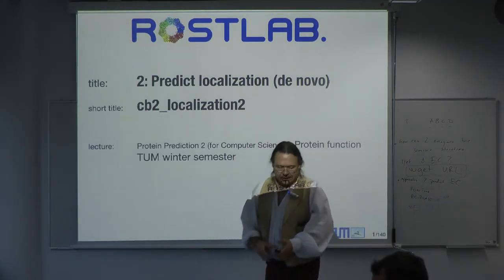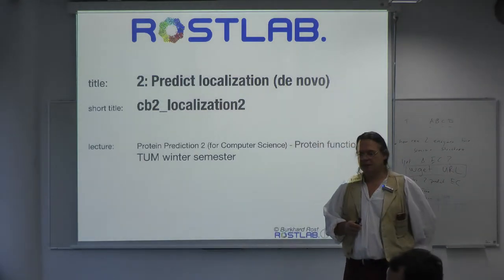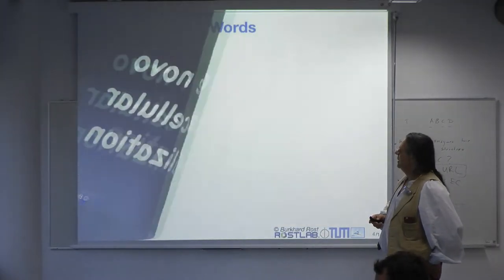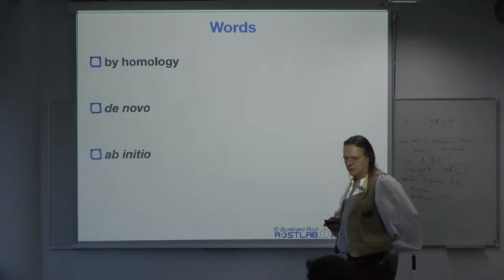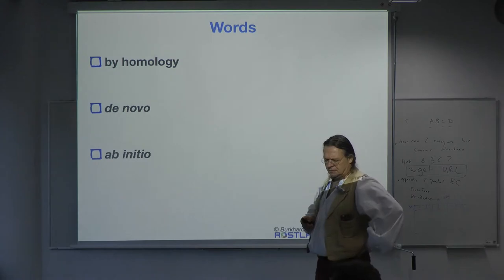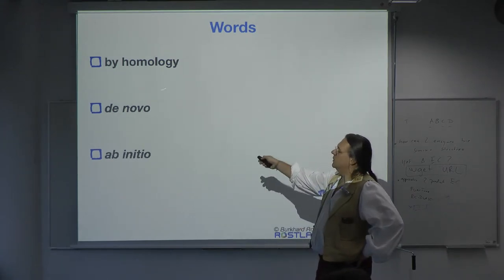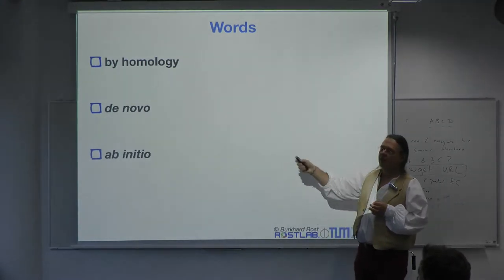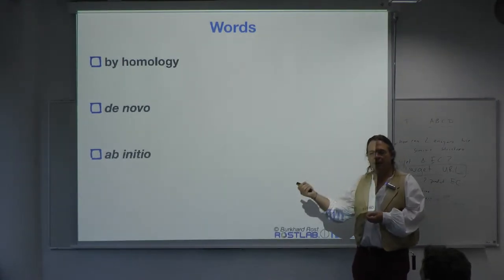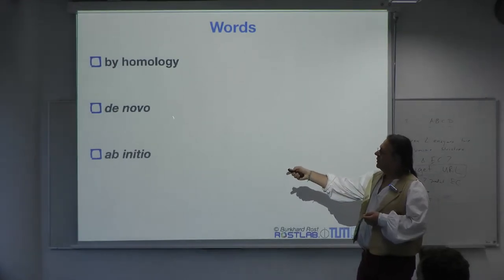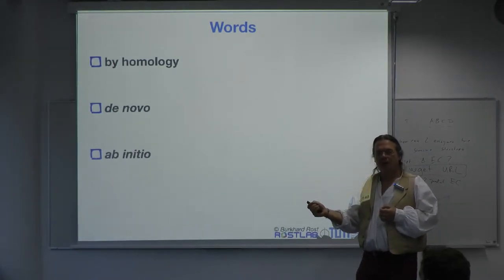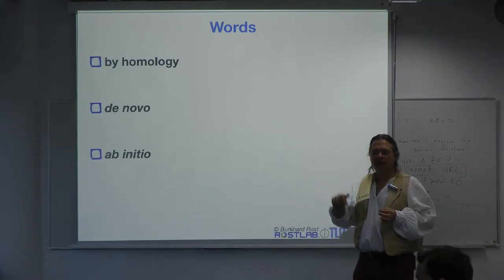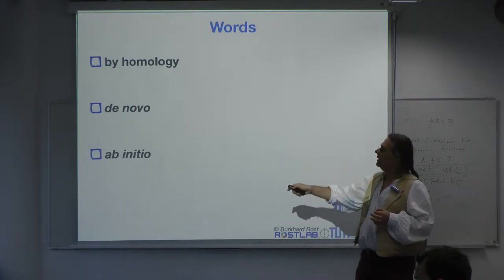Welcome everybody. We continue on the prediction of localization. To repeat: homology means you infer from information you get from a protein that is similar to it — the idea is there's an evolutionary relation, and from sequence comparison you can infer similarity in feature or function. The novel approach uses lookup information but trains a machine learning device, and at prediction time you don't explicitly relate to one particular protein with an evolutionary connection.